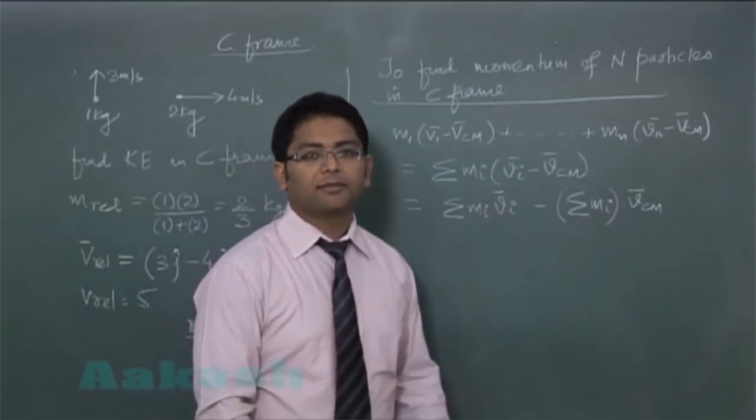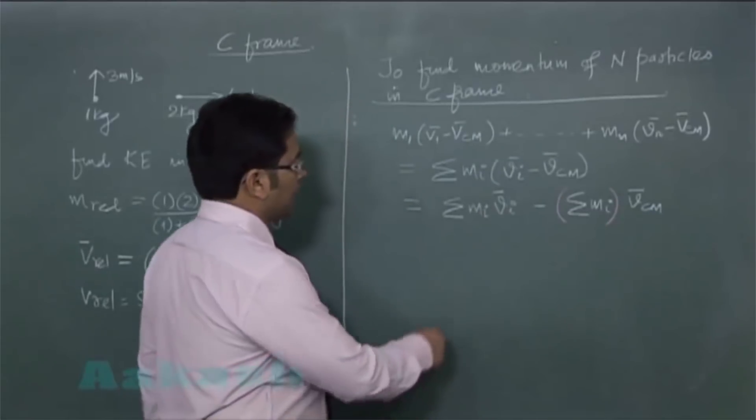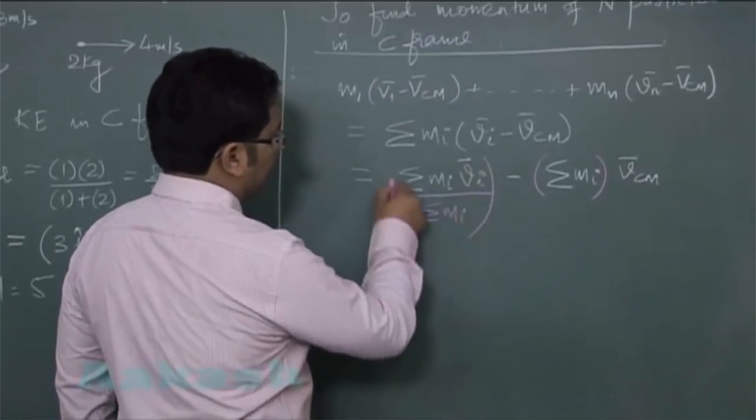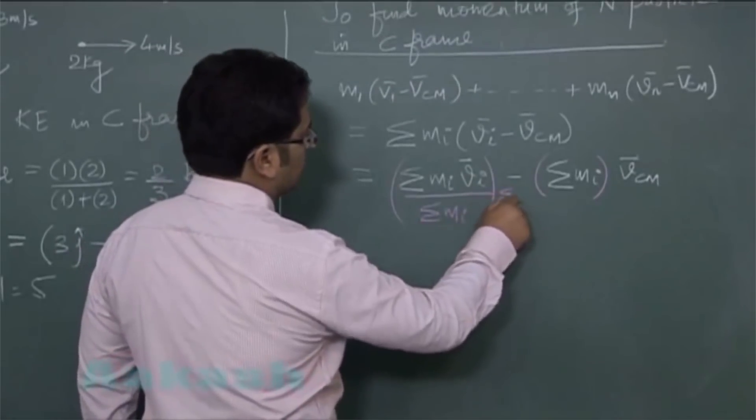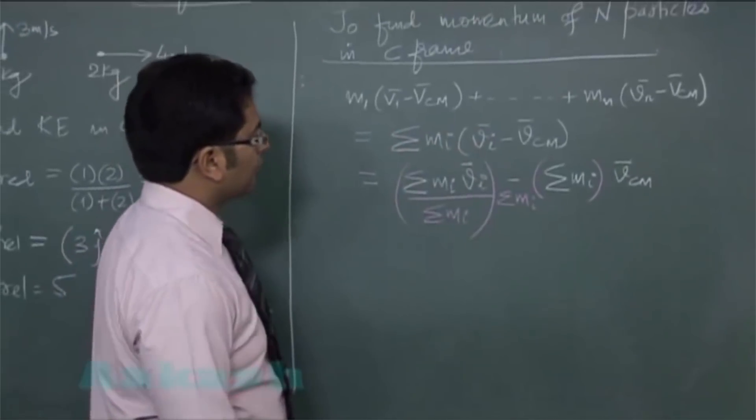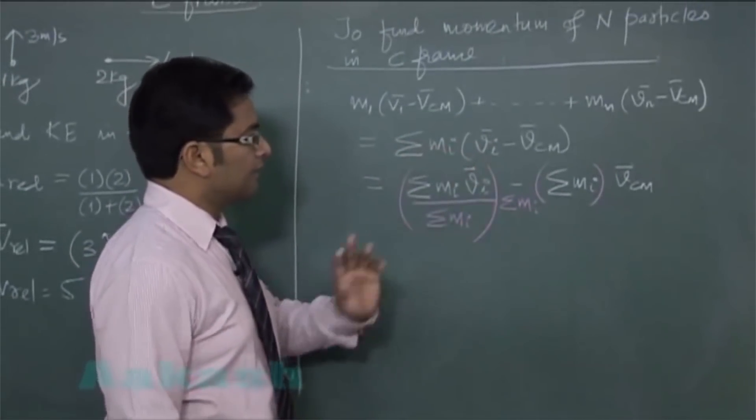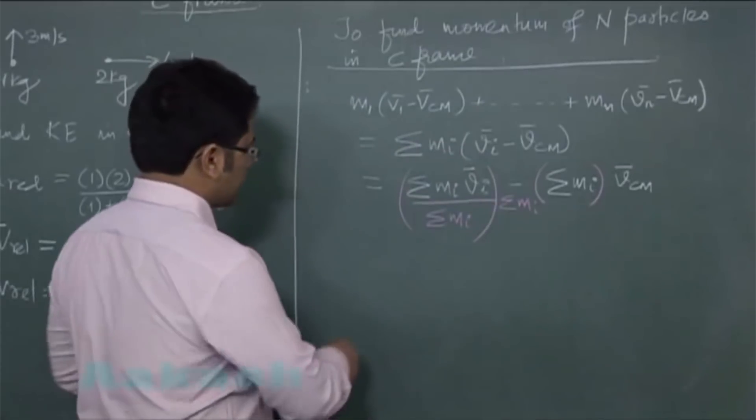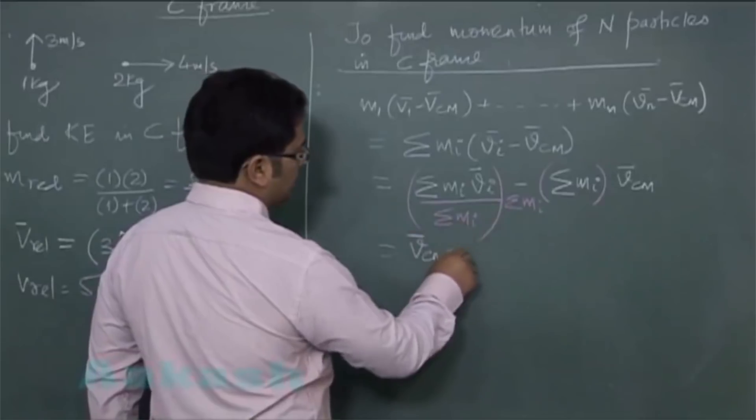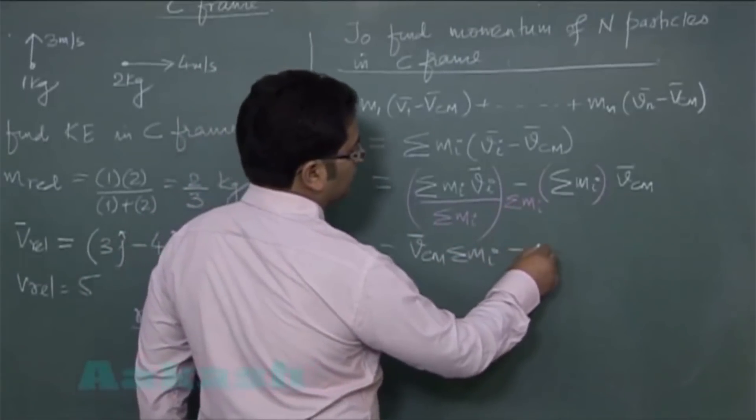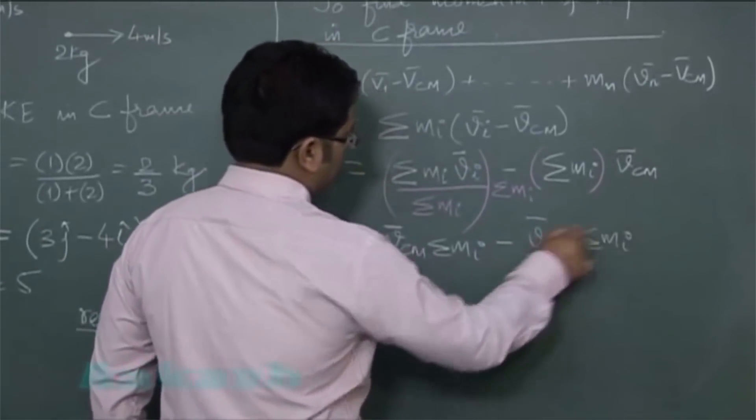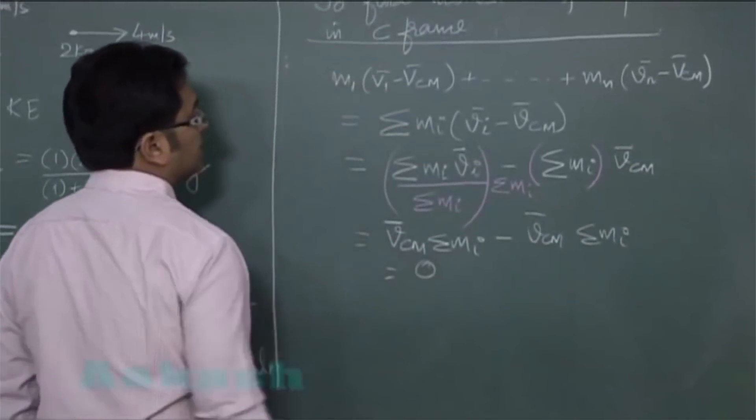But what I'll do is multiply and divide by Sigma M. So this is now VCM and this is MI, and here is also the same thing: VCM Sigma MI. And the result comes out to be zero.